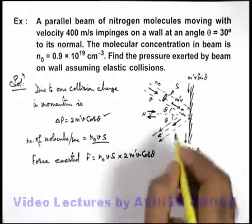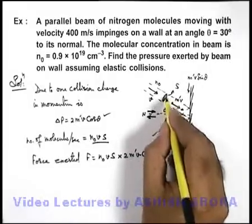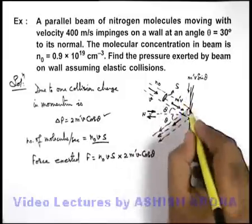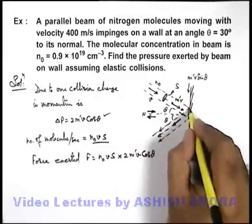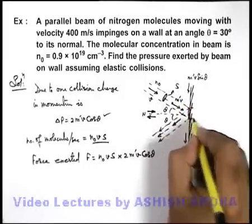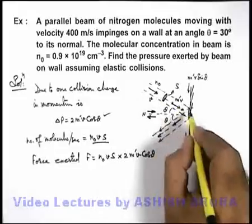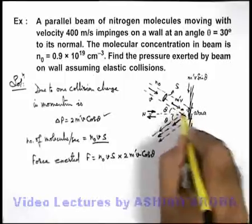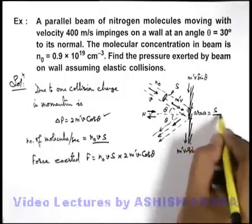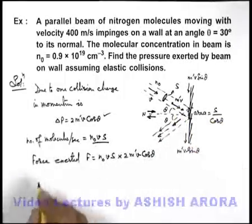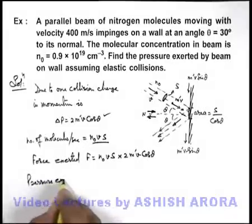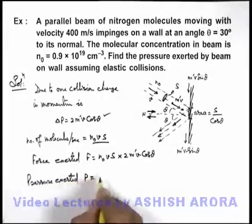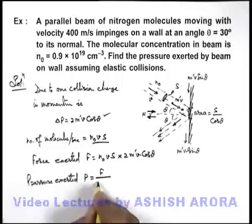Now if we find out the pressure we can see, if the cross sectional area of the beam is S, the area on which the beam is impinging on the wall it'll be slightly more because of inclined beam. And if this angle is θ, this area on which the molecules are striking can be written as S/cos θ. So we can calculate very easily the pressure exerted as this pressure is F by S upon cos θ.